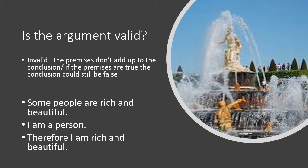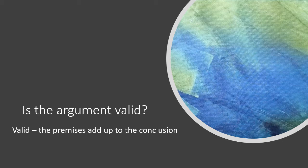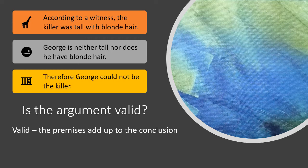So what makes something a valid argument? If it's invalid, even if the premises are true the conclusion can still be false. In a valid argument, the premises have to add up to the conclusion — if the premises are true, then the conclusion is true as well. A good example: according to a witness, the killer was tall with blonde hair. George is neither tall nor does he have blonde hair. Therefore, George could not be the killer.